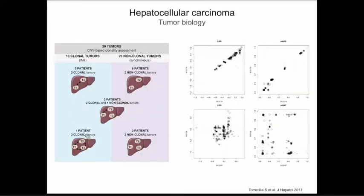A recent study by Sara Torrecilla analyzed multiple nodules from the same individual. Patients with HCC can present with multinodular disease, and those within the Milan criteria — less than three nodules, less than three centimeters — are candidates for liver transplantation. When you analyze different nodules from the same patient using genomic analysis like copy number to look for chromosomal aberrations, in some cases the tumors are essentially the same — one is a metastasis of the other. But from other patients the correlation is very poor, meaning you have a patient with two nodules called multinodular HCC but essentially two molecularly different HCCs — not accounted for in current treatment.